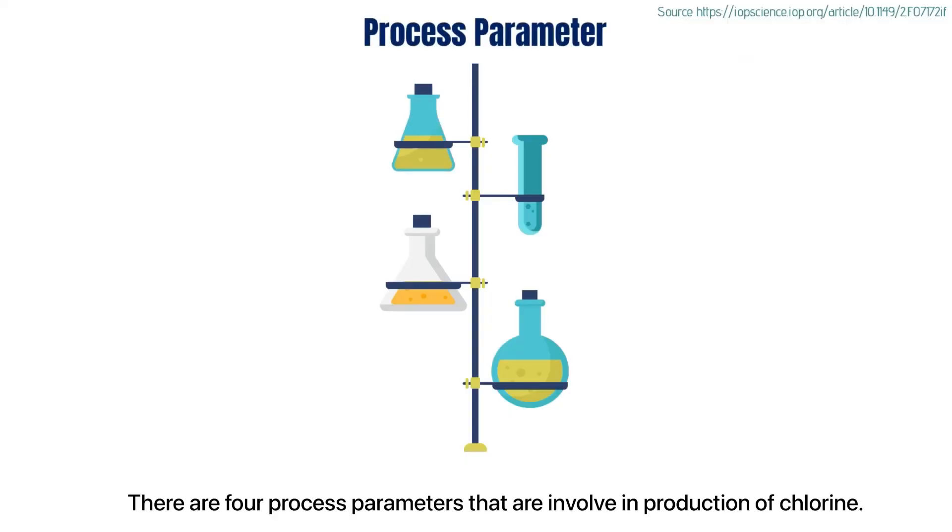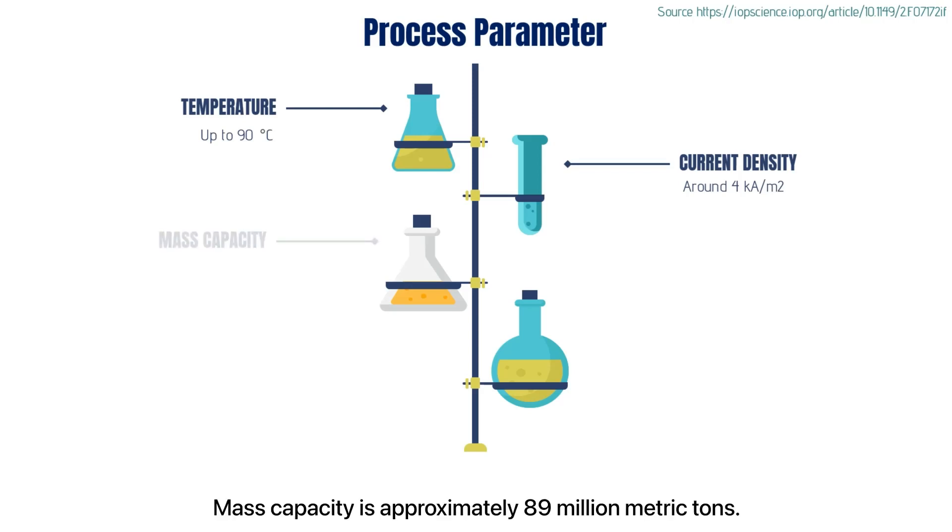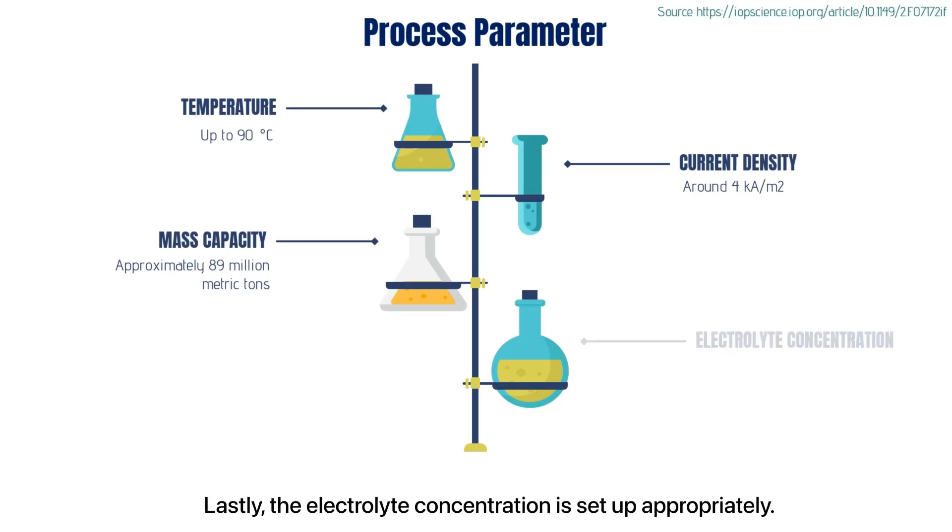There are four process parameters that are involved in the production of chlorine. Firstly, the temperature for the solution is up to 90 degrees. The current density is around 4 kiloamperes per meter square. Mass capacity is approximately 89 million metric tons. Lastly, the electrolyte concentration is set appropriately.